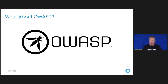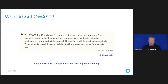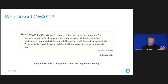You might ask, what about OWASP? If you haven't heard of OWASP, it's the Open Web Application Security Project — a nonprofit foundation that works to improve the security of software. However, according to Johnny Christmas, a well-known hacker, the OWASP top 10 hasn't really changed much in the last 10 years. That basically means that even though we've given all this guidance to developers, they're not listening, or maybe we have new developers coming on board. We continue to repeat the same mistakes that have exposed systems for a decade now. This is from an InfoQ Podcast — if you're into web security, I highly recommend it.